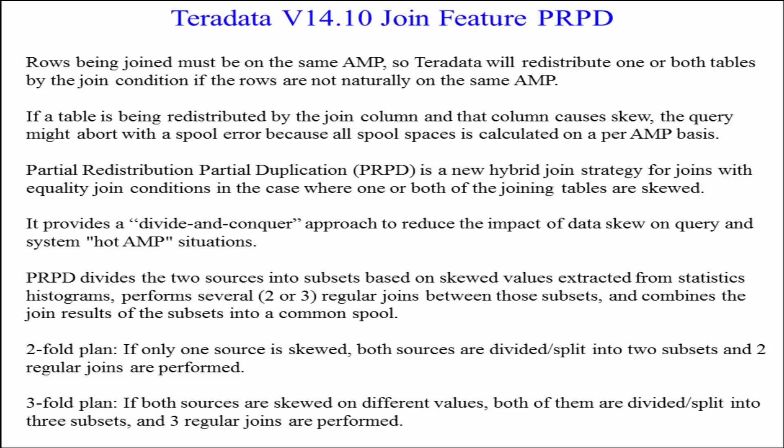Teradata v14.10 join feature: PRPD — Partial Redistribution Partial Duplication. Rows being joined must be on the same AMP, so Teradata will redistribute one or both tables by the join condition if the rows are not naturally on the same AMP. If a table is redistributed by the join column and that column causes skew, the query might abort with a spool error, because all spool space is calculated on a per-AMP basis.